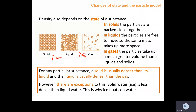Density depends on the state of the substance. In solids, particles are packed close together. In liquids, particles are free to move, so the same mass takes up more space. In gases, particles take up a much greater volume than in liquids and solids. For any particular substance, a solid is usually denser than its liquid, and a liquid is usually denser than the gas.